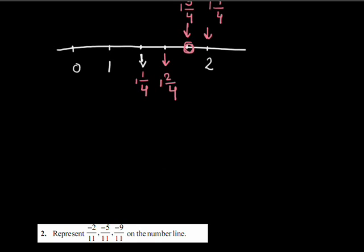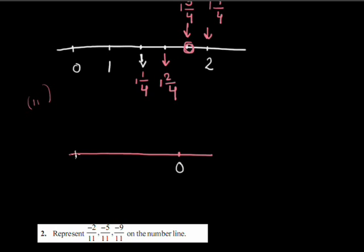Coming to the next question: I have to represent -5/6 on the number line. Since -5/6 is negative, I will divide the region between 0 and -1 into 6 equal parts. Six equal parts means 5 points.